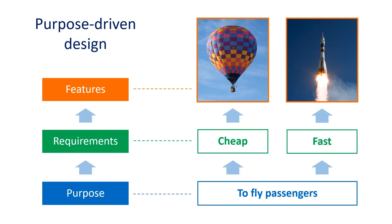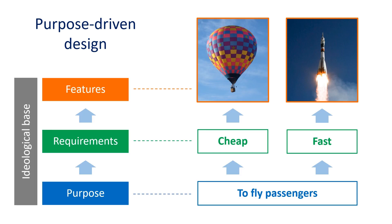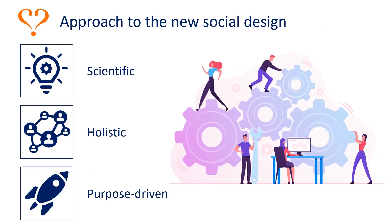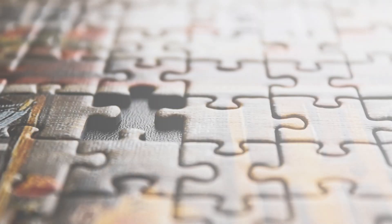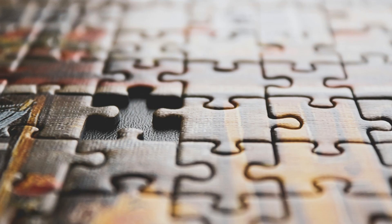When designing a social system, the purpose-driven approach has an additional and crucial aspect: the ideological base. This refers to the core beliefs, values, and norms that shape and guide the behaviors, interactions, and structures within a society, influencing how social roles, institutions, and relationships are organized and maintained. The ideological base has to be consistent with the purpose, requirements, and features of a social system. The Sustainable Ideology Project has made significant progress in designing a new sustainable political-economic system.